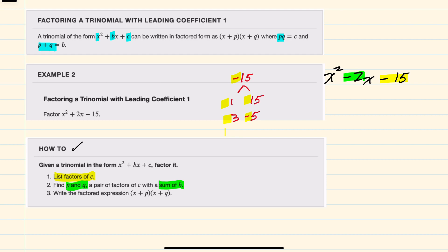That means this must be -5, and this must be +3. So positive 3 plus negative 5 gives me -2 that I need for the middle term. I've identified p and q as +3 and -5.